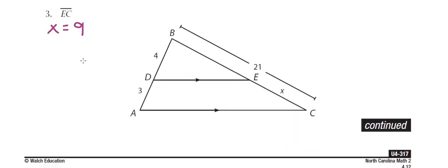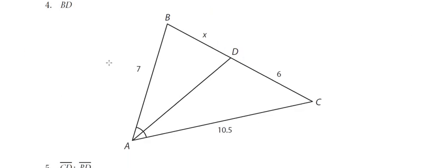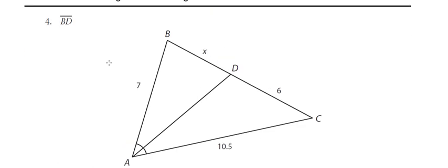Then you went on to the next page — these were angle bisectors, and the first one asks you for the value of x. You get that x, because BD is just x there, you get that value is 4.